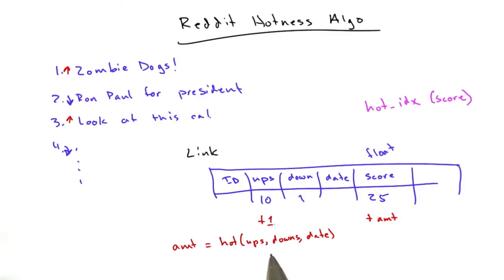It's a hot function, and it takes the number of ups, the number of downs, so it can compute a total score, which is ups minus downs, and the submission date of the link.